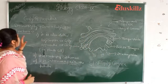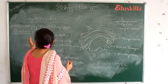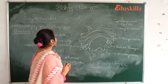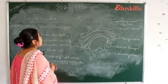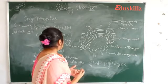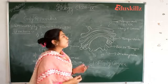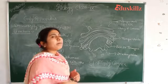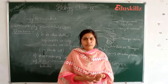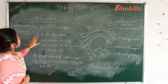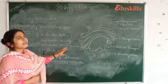We will first discuss the structure of the Golgi apparatus. The Golgi apparatus was first discovered by Camillo Golgi in 1898, and it is also called the Golgi complex or Golgi apparatus. In plant cells, it is called Dictyosomes.